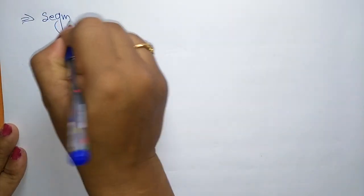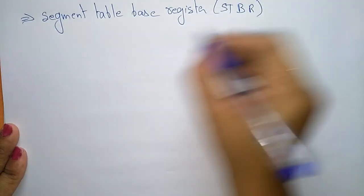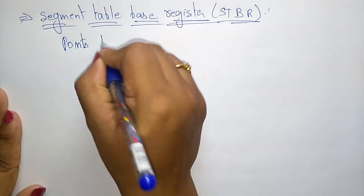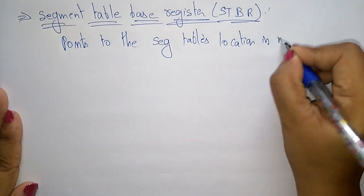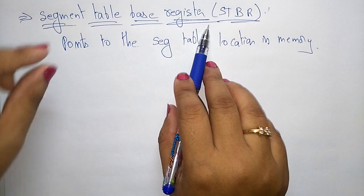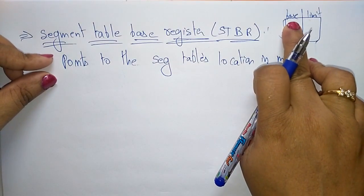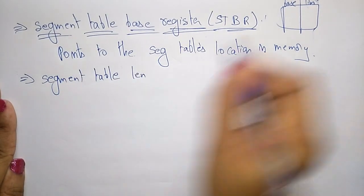Now let us see the segment table base register. In the architecture, there is the Segment Table Base Register, or STBR. The STBR points to the segment table's location in memory — it holds the base address of where the segment table is stored in memory.